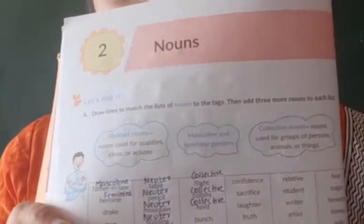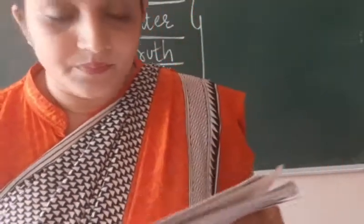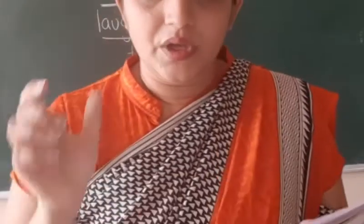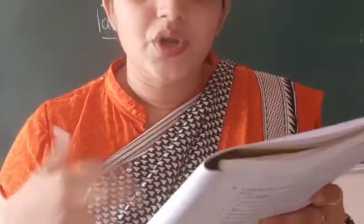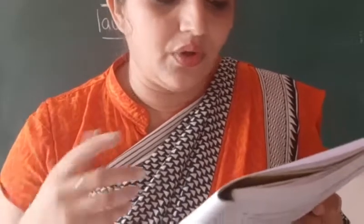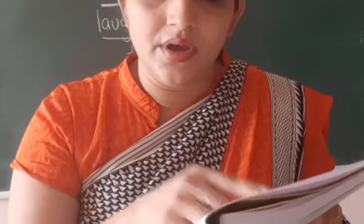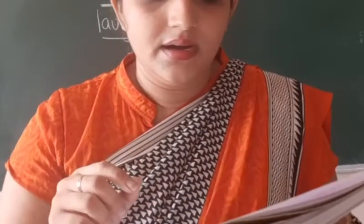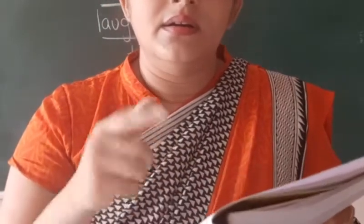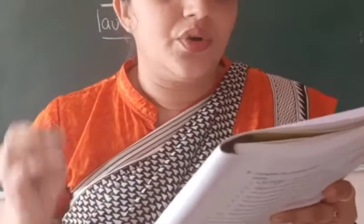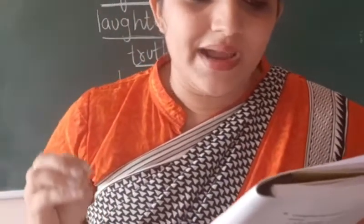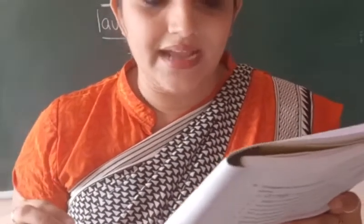They have given tags like this — can you see these tags? They have given the tags with the meaning of the particular noun. What you have to do? You have to match that particular word with the tag. So draw the lines to match the list of the nouns to the tag.